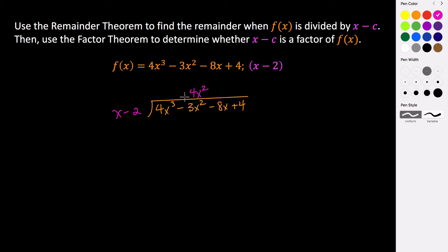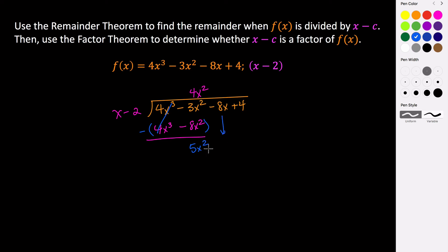We would have to multiply x by 4x squared to get 4x cubed, so I write 4x squared and line up results based on degree. 4x squared times x is 4x cubed, and 4x squared times negative 2 is minus 8x squared. We subtract this whole thing — the negative gets distributed through — so 4x cubed minus 4x cubed cancels, and negative times negative 8x squared gives positive 8x squared. So negative 3x squared plus 8x squared is 5x squared. We bring down the negative 8x, then ask what do we multiply x by to get 5x squared — that's 5x. So 5x times x is 5x squared and 5x times negative 2 is minus 10x.